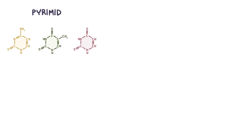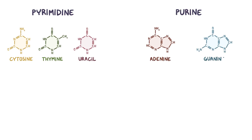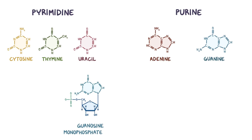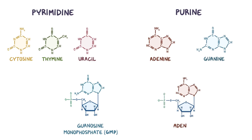There are three pyrimidine bases — cytosine, thymine, and uracil — and two purine bases, adenine and guanine. So the name of a ribose-containing monophosphatic nucleotide based on guanine would be guanosine monophosphate, or GMP for short, whereas one based on adenine would be adenosine monophosphate, or AMP for short.